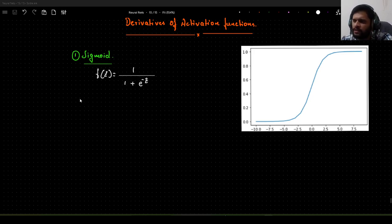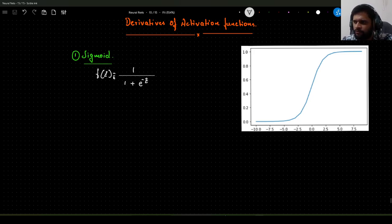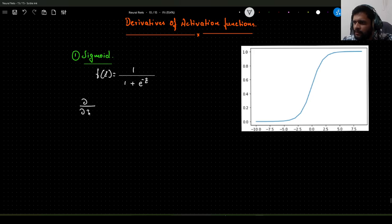First is sigmoid, and the sigmoid function is given as f of z is equal to 1 divided by 1 plus e to the power minus z. We already know this. Now we have to find out the derivative of this function with respect to z. So let me write that d by dz of f of z.